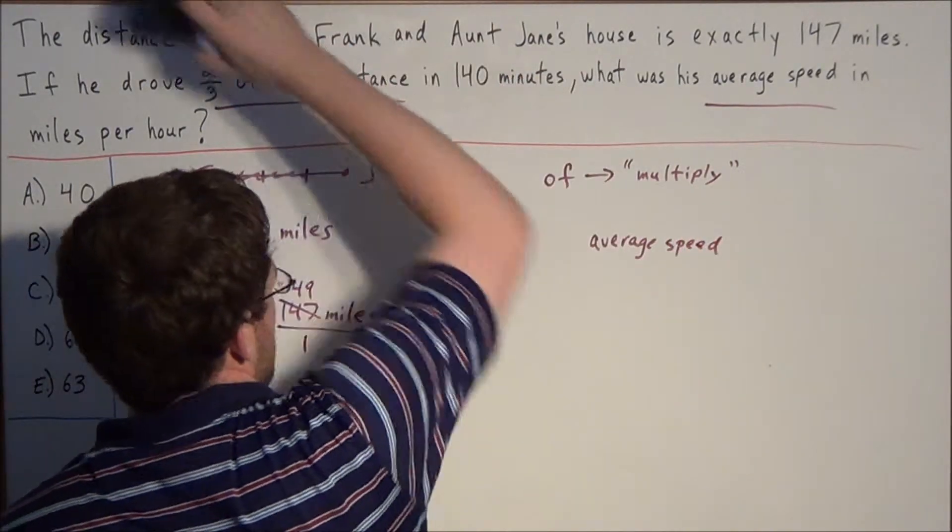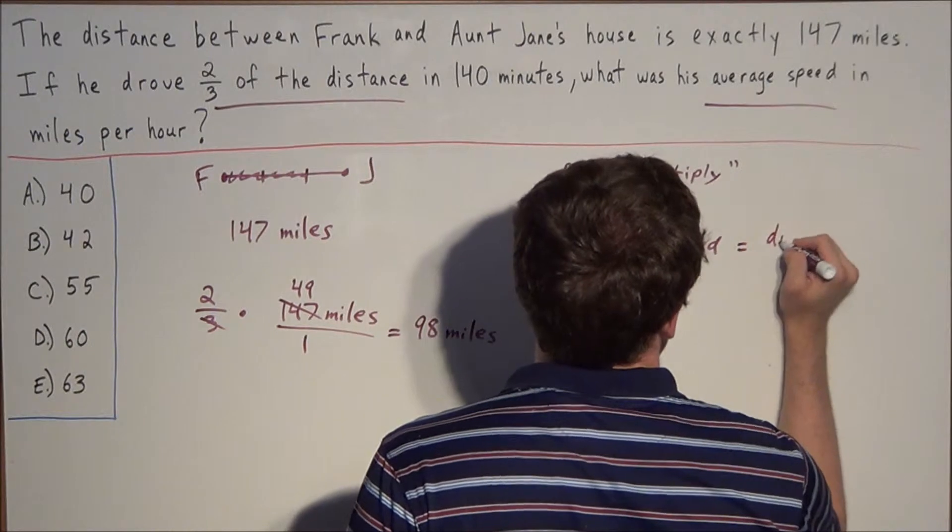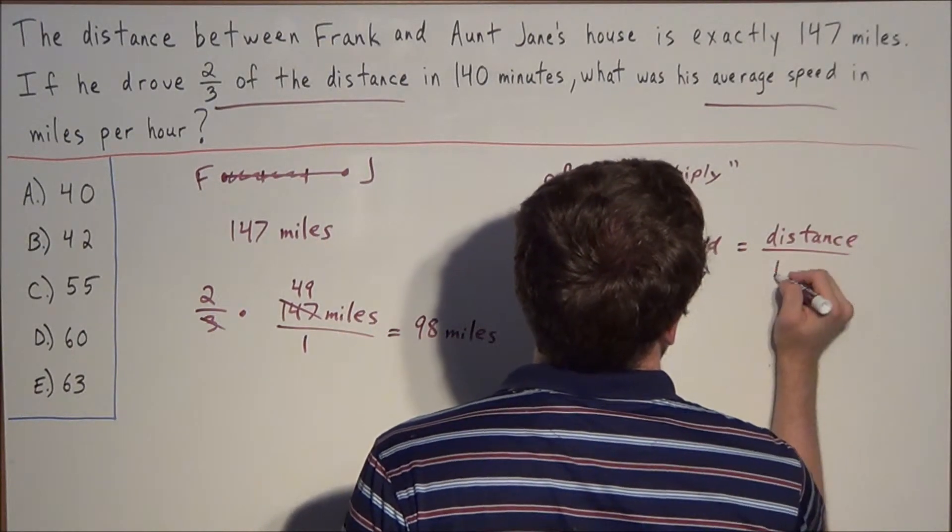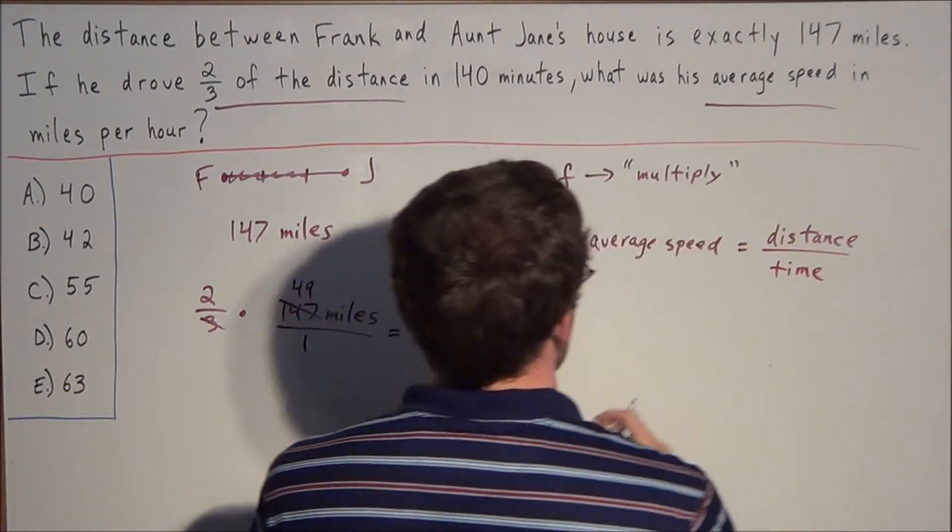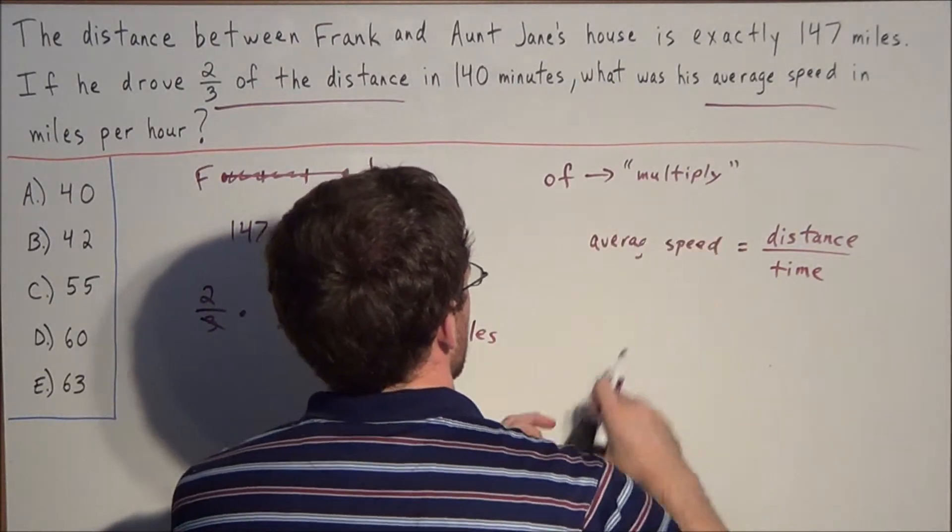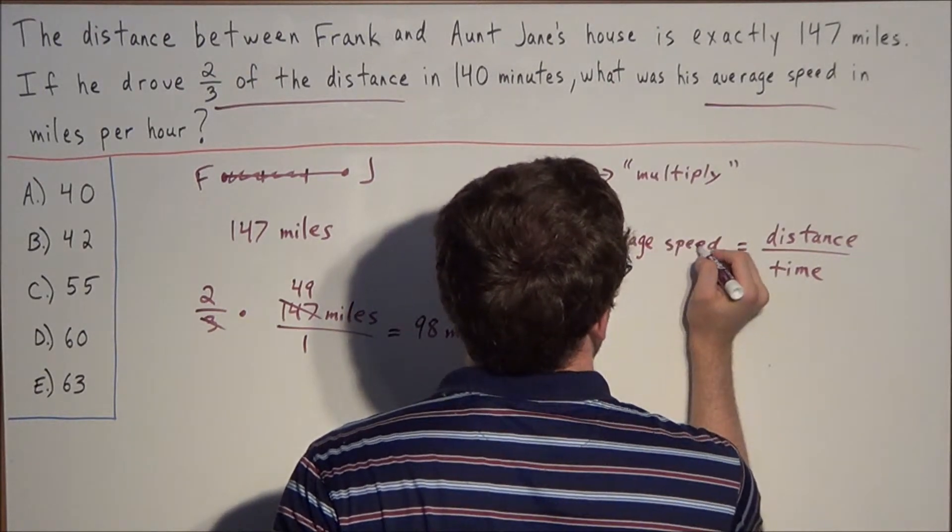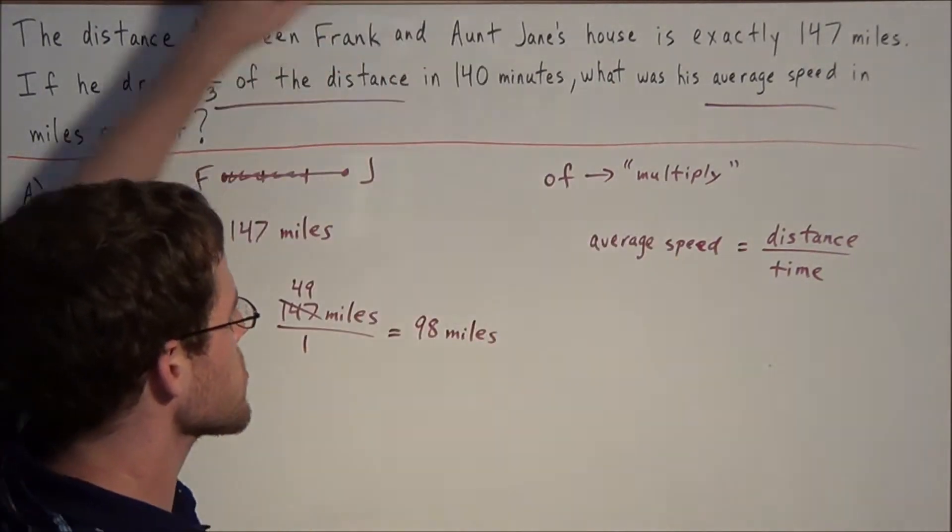We find average speed by measuring distance over time. So average speed equals distance over time.